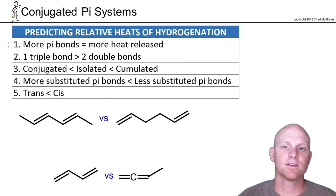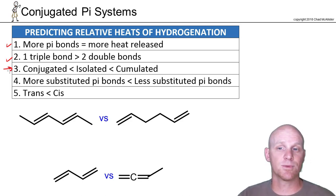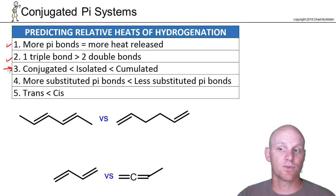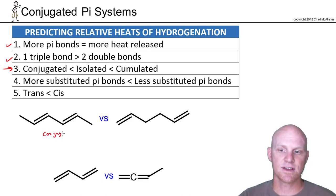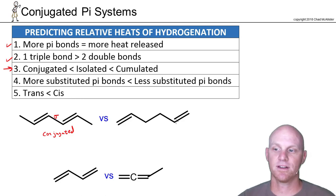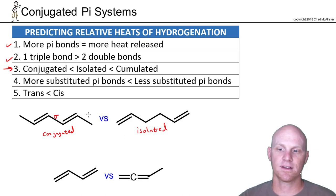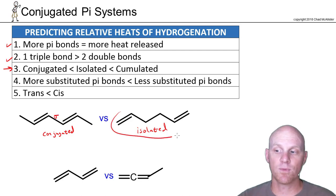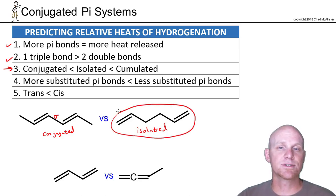If you've got the same number of pi bonds and no difference in terms of double and triple bonds, the next thing you look for is what's relevant to this chapter: the relationship of conjugated versus isolated versus cumulated. Conjugated double bonds are more stable and will be less exothermic upon hydrogenation. Isolated systems are less stable, and cumulated are the highest energy and therefore release the most energy upon hydrogenation. A single sigma bond in between gives conjugated; more than one sigma bond gives isolated; and cumulated is higher energy, releasing more energy when converted to the corresponding alkane.